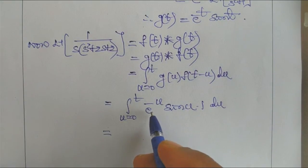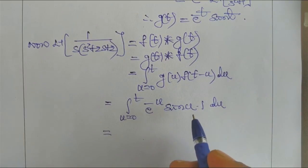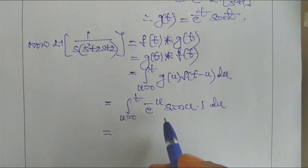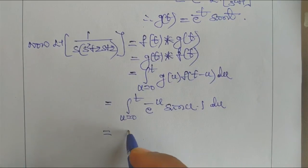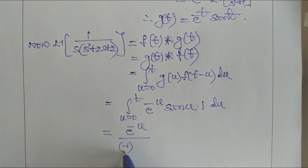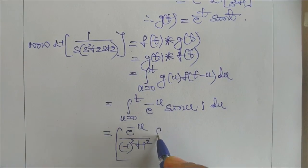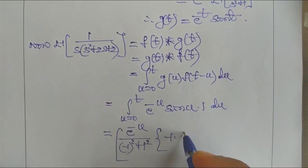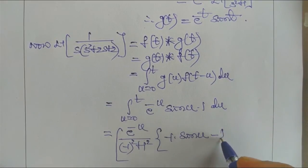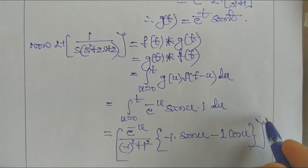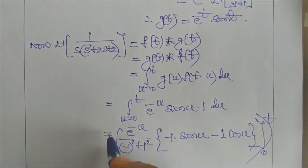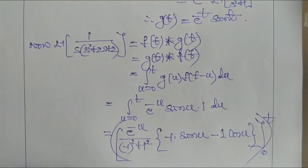Using the formula ∫e^(ax) sin(bx) dx = e^(ax)/(a² + b²) · [a sin(bx) − b cos(bx)], with a = −1 and b = 1: the denominator is (−1)² + 1² = 2, giving e^(−U)/2 · [−sin(U) − cos(U)] evaluated from 0 to T.